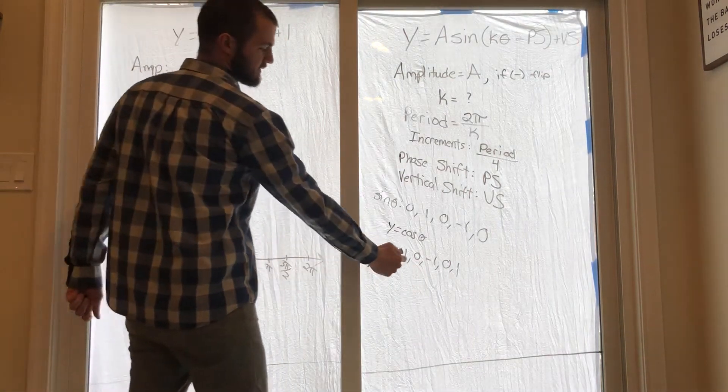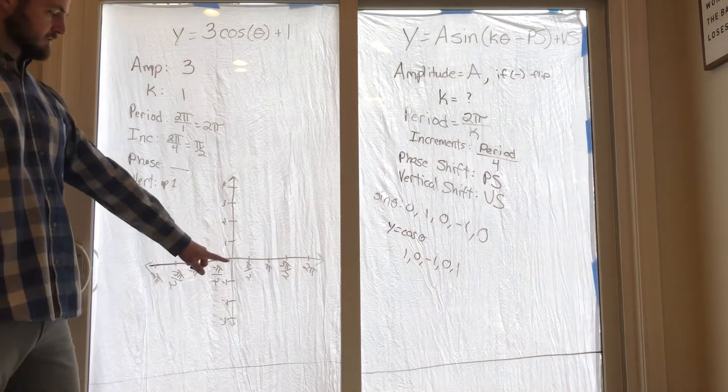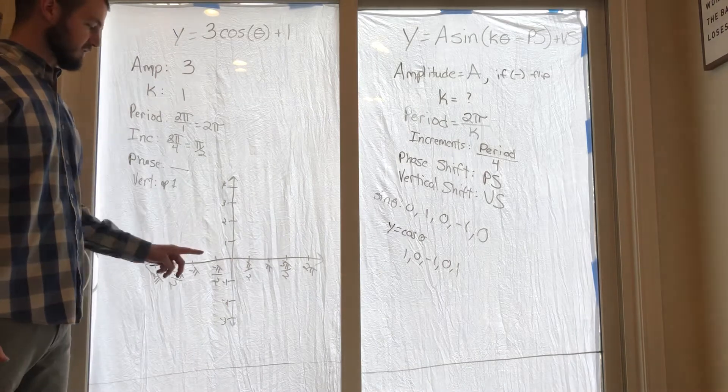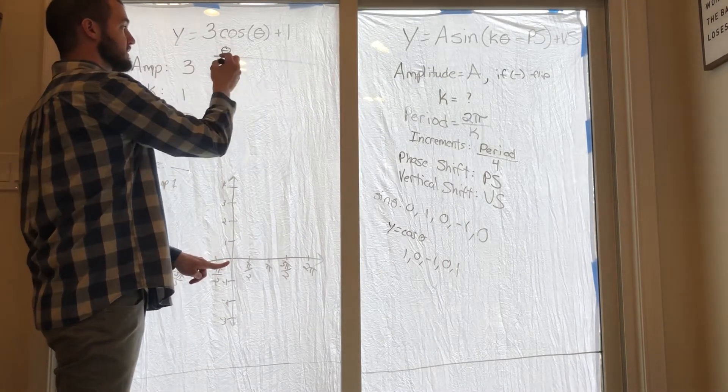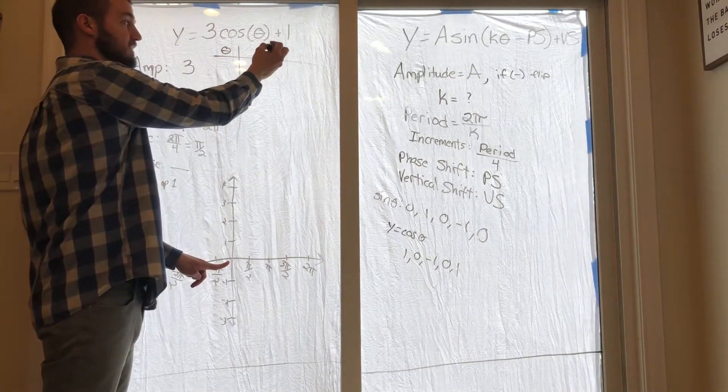So you're using the 1, the 0, the -1, 0, the 1. Starting point is 0 because we don't have a shift left or right. So for 0 I'll put this in here, we can make like an x-y table if you want, except it's kind of like a theta-y table, right?